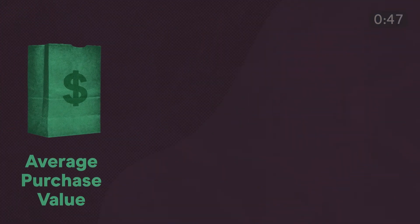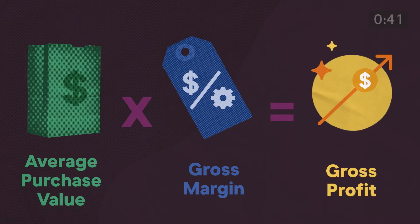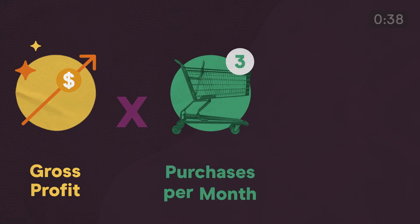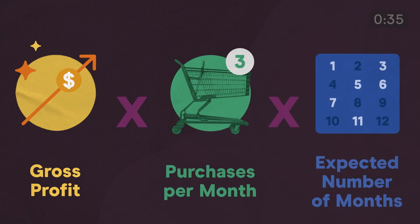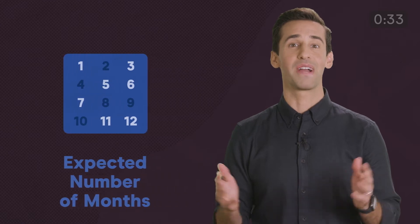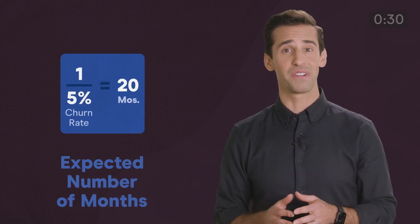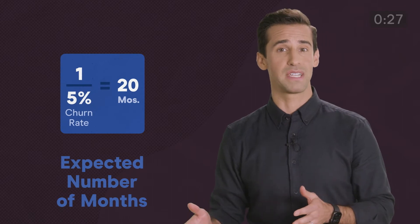You can calculate it by multiplying how much a customer spends per purchase by average gross margin percentage, and that gets you the gross profit amount. Then multiply by the average number of purchases made per month, and then by how many months you will retain that customer. If you're having a hard time estimating the number of months, you can simply divide one by your monthly churn rate percentage.